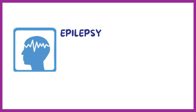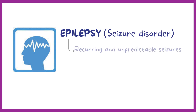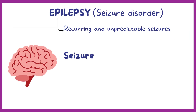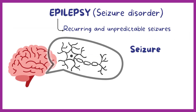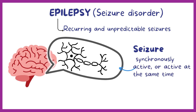Epilepsy means seizure disorder, so people with epilepsy have recurring and unpredictable seizures. A seizure is a period where cells in the brain, or neurons, are synchronously active — or active at the same time — when they're not supposed to be.